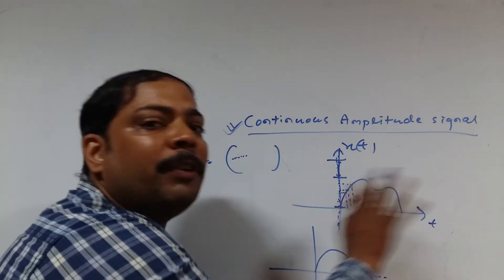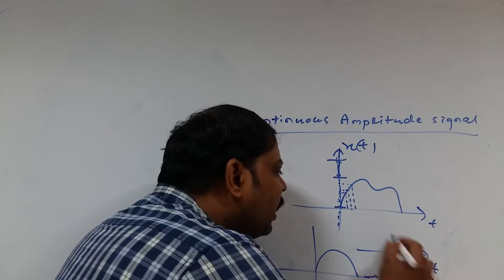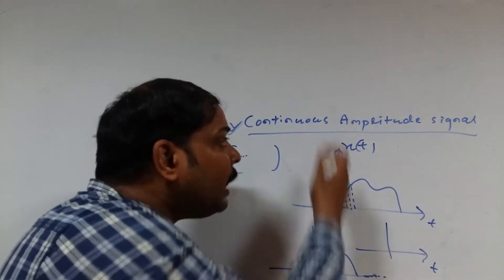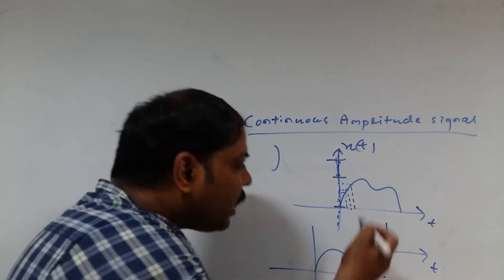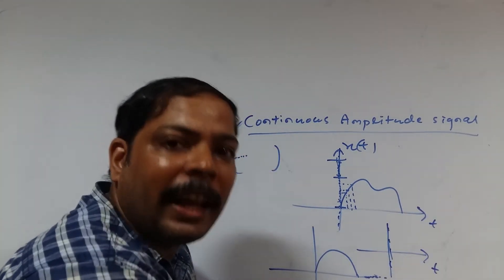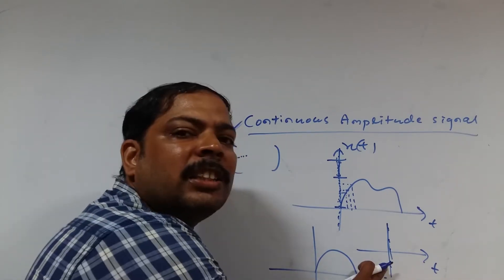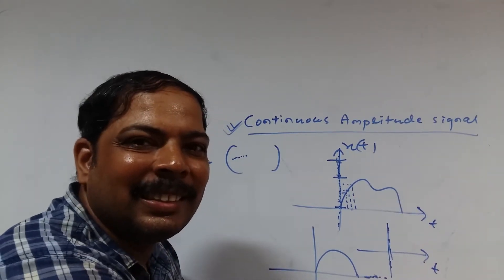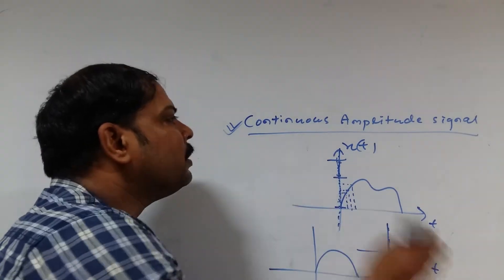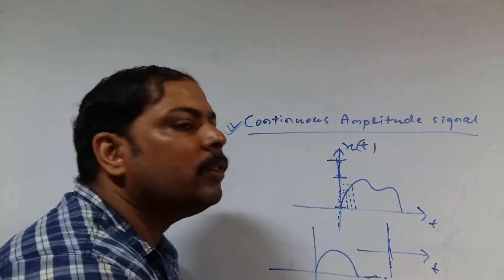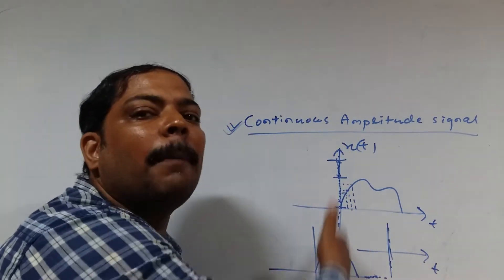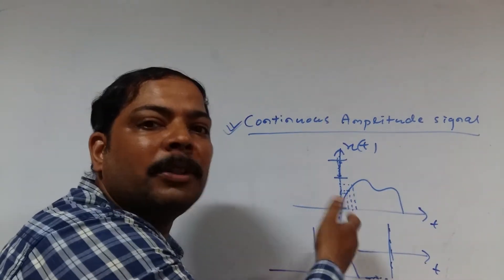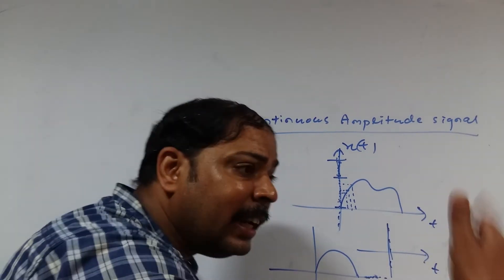Whenever you are discussing continuous time signal, you take all the time points within the set and for all time points you define amplitude. Whenever you are considering continuous amplitude signal, you take all the amplitude points and for all amplitude points you define time. If it is possible, then you can say this is a continuous amplitude signal. If it is not possible, then you can say it is basically not a continuous amplitude signal. A signal is said to be continuous in amplitude if for every point over the amplitude axis, time points are defined — that means you are getting time values.